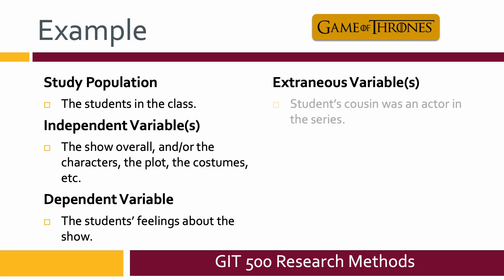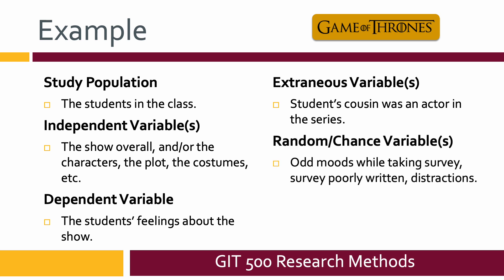You could also have extraneous variables, such as maybe one of the students' cousin was an actor in the series, in the show. Or you could have random or chance variables such as the students being in weird moods when they were taking the survey. Maybe you didn't write a very good survey. Maybe the student taking the survey had distractions—a dog was barking in the back, or they were eating while they did it. So those things you have no control over. And normally they're only going to throw your data off maybe a little bit, particularly with more people in your study. But it's those first three here that we list: study population, independent variables, dependent variable.